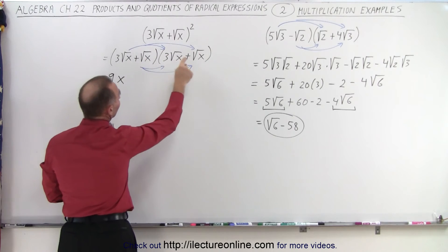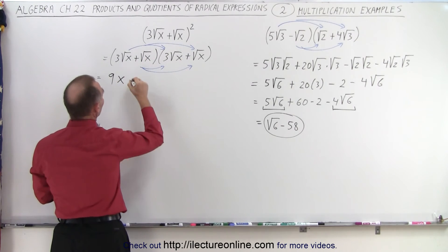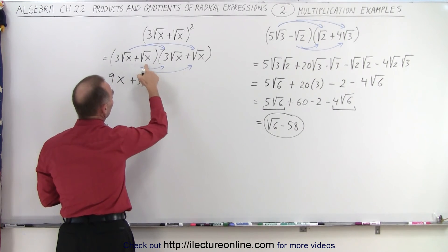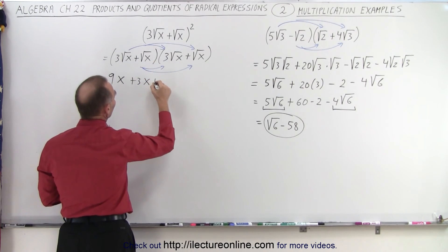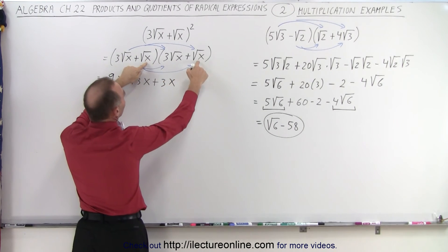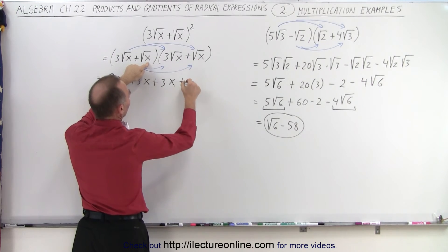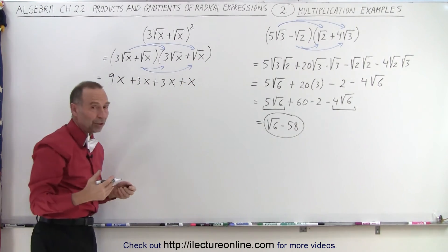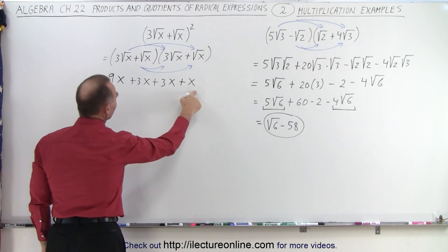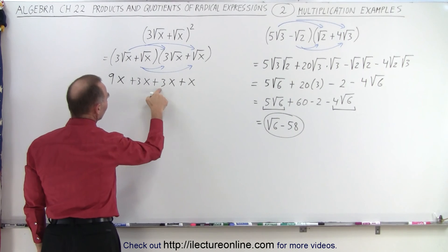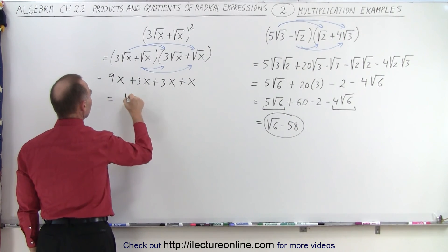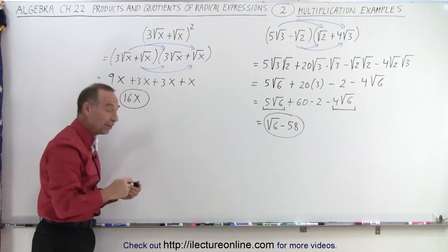So the next multiplication will be this times this, giving us plus three times the square root of x times the square root of x, which is simply x. And then multiply these two together, giving us plus three times the square root of x times the square root of x, which is simply x. And then we multiply these two together — the square root of x times the square root of x — that's simply x. Now we see that they're all like terms, so we add them together: nine plus six is 15, plus one is 16. So this is equal to 16x as our final result.